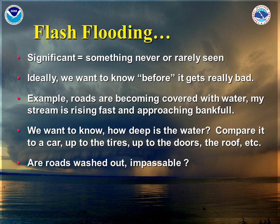Sometimes this water can cause real-world effects where it runs into people's basements, but this isn't actually flash flooding. An example of true flash flooding is when a stream rises completely out of its banks, or when a road completely washes away. If you observe flash flooding, please tell us. Compare it to an obstacle — for instance, a car. Is the water up to the tires, up to the doors, up to the roof? Are roads washed out and impassable? Please tell us all observations you can make about the flash flooding situation.